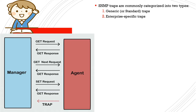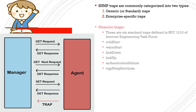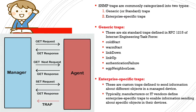Generic traps are six standard traps defined in RFC 1215 of the Internet Engineering Task Force. The six types are: Cold Start, Warm Start, Link Down, Link Up, Authentication Failure, and EGP Neighbor Loss. Any device supporting SNMP that meets the requirements for these traps will have the capacity to trigger them.